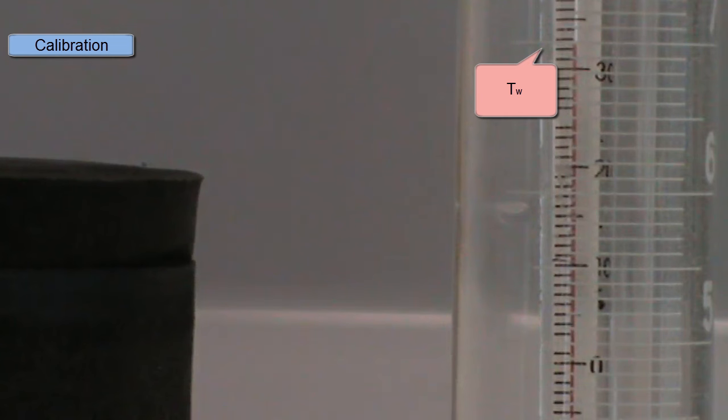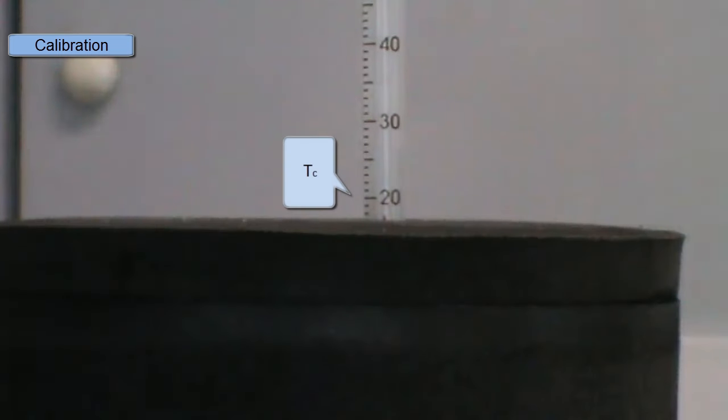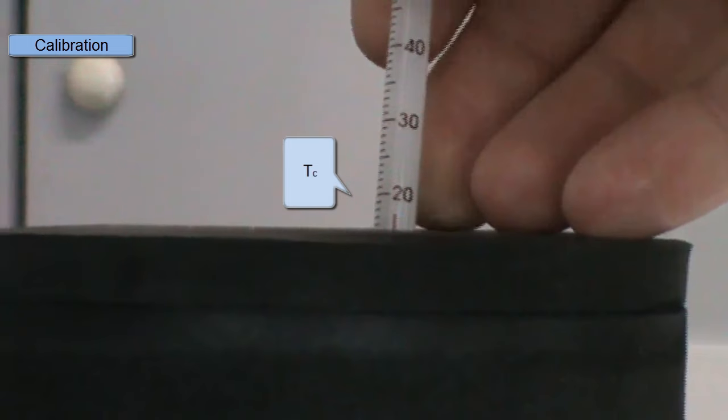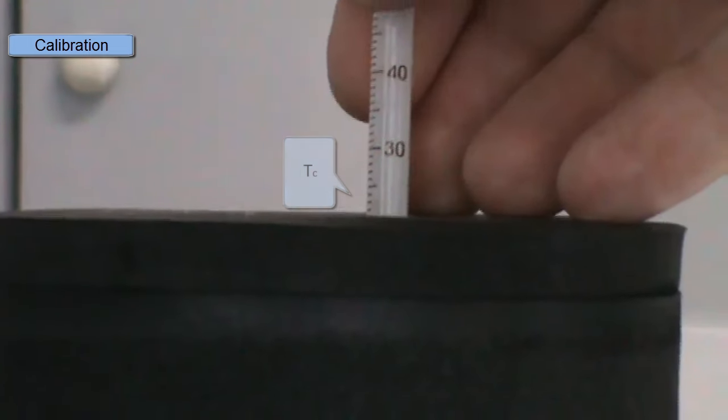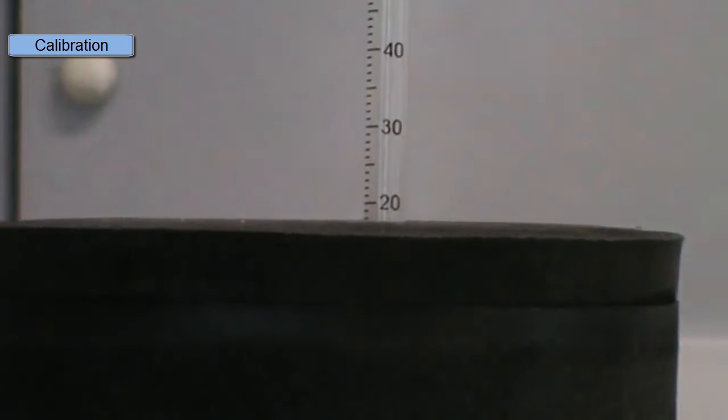So our temperature of our warm water here is just under 33 degrees and the temperature of the cold water is just 18 degrees. So in this experiment, the cold water is going to gain some heat, the warm water is going to lose some heat.